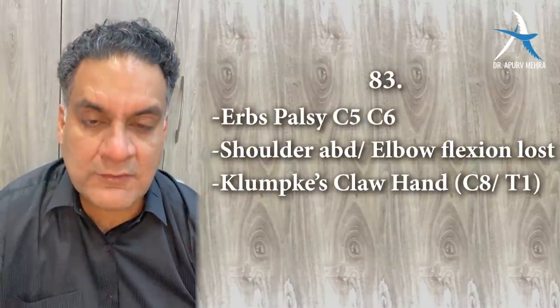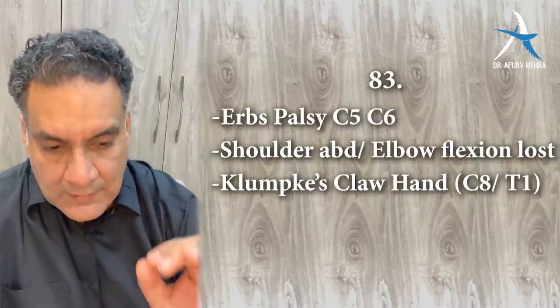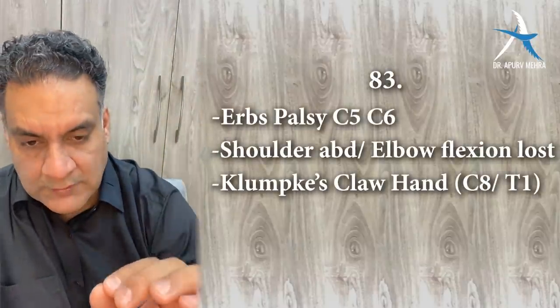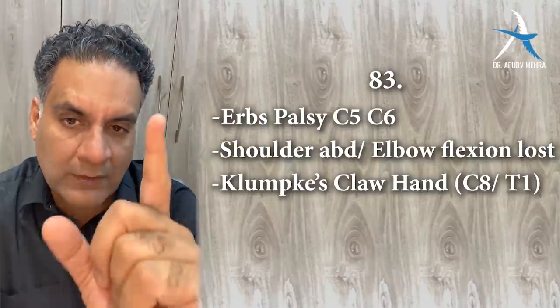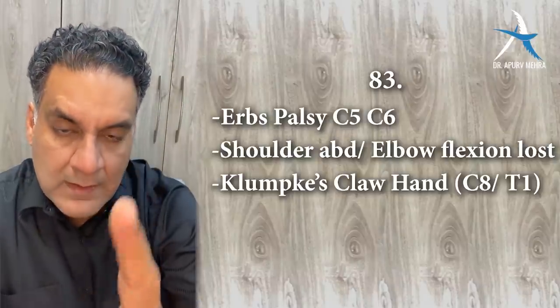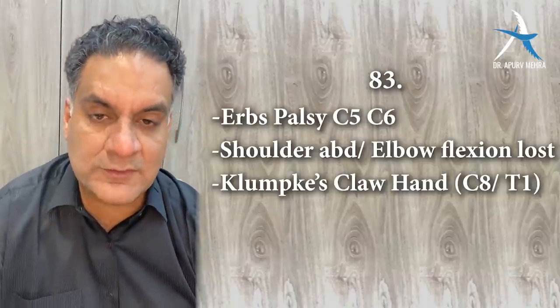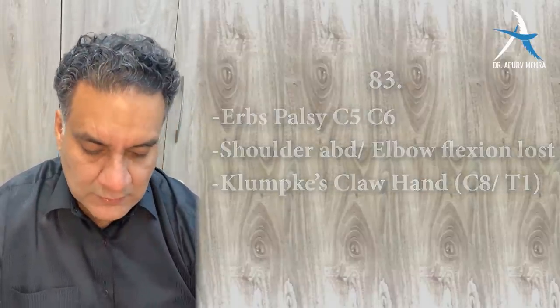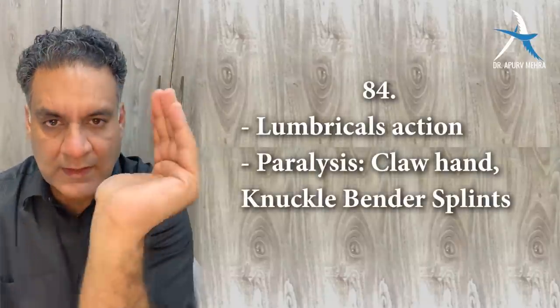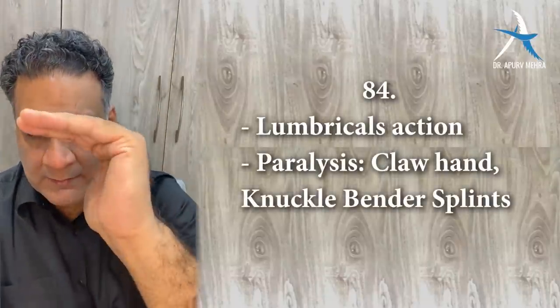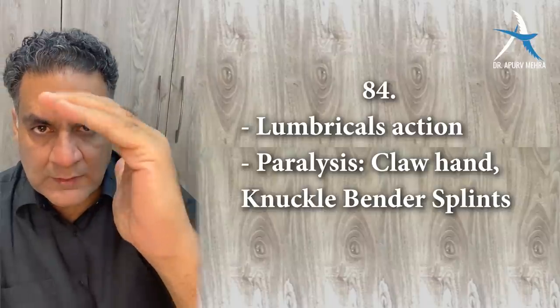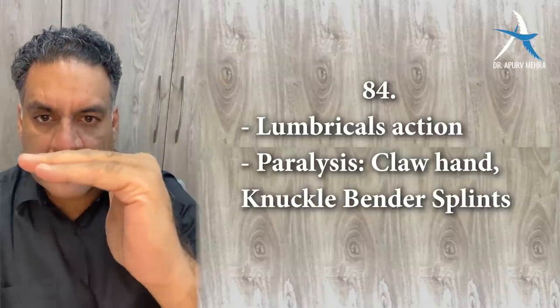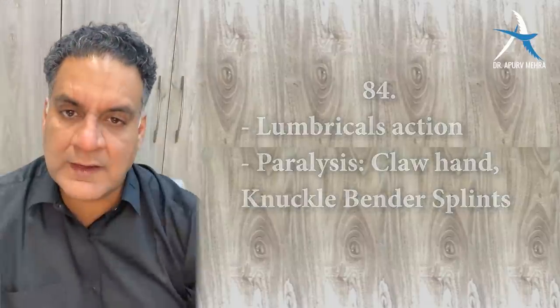Point number eighty-three: Erb's palsy involves C5 and C6 nerve roots — there is loss of shoulder abduction and elbow flexion, the two most important movements of the upper limb. Klumpke's palsy is involvement of C8 and T1 — there is claw hand. The lumbricals make an 'L' shape in your hand, and their palsy causes claw hand. Apply a knuckle bender splint to correct it.